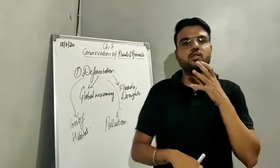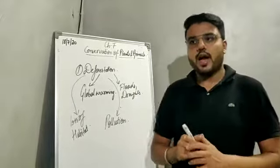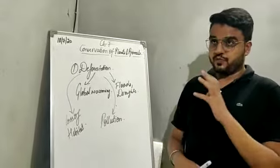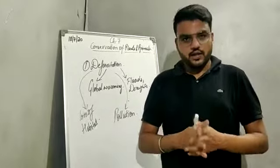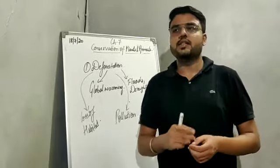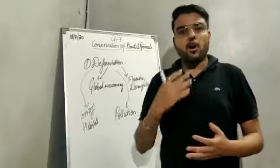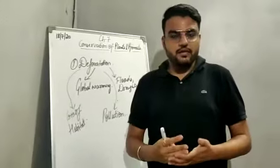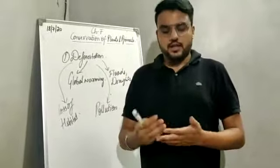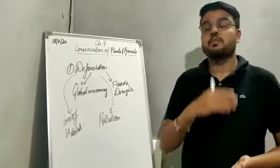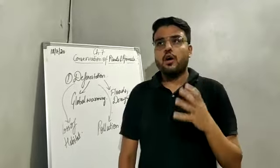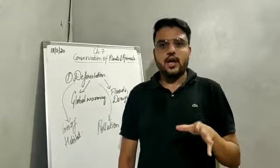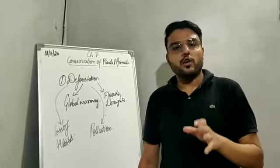So these were some consequences of deforestation. Now, what is biodiversity? Biodiversity, as we have already learned, is the different forms of life found on the earth — like plants, animals, microorganisms and all the other living creatures found in an area or on the earth. That is called biodiversity.